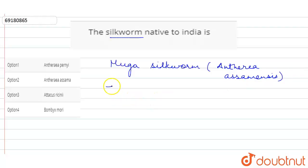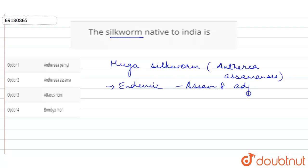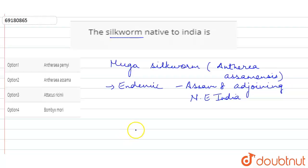This is endemic to Assam and adjoining areas in the northeastern part of India. The endemic silkworm is native to India and naturally produces golden silk.